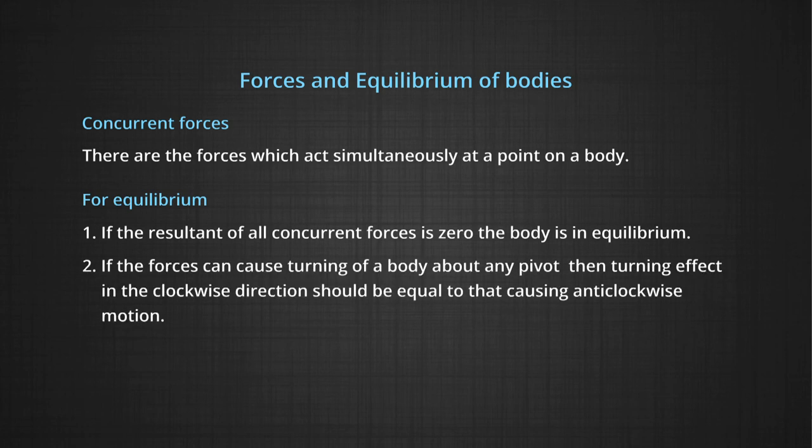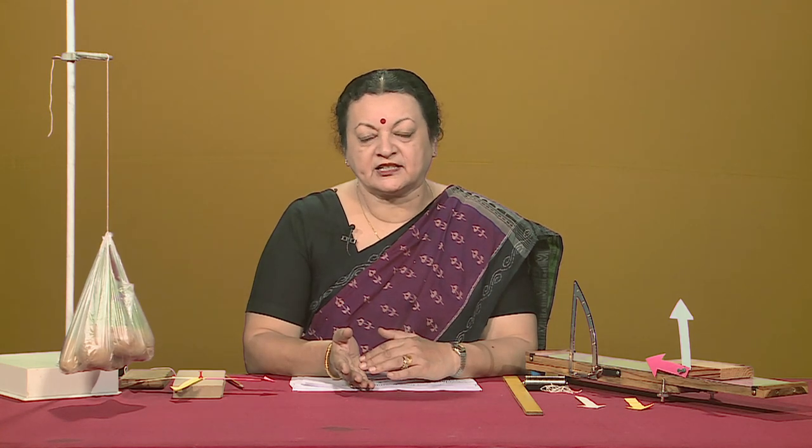The rules for equilibrium are: if all the forces make up a net force equal to zero, then the body is in equilibrium and does not move at all. Also, if a force is likely to cause rotation about some pivot, the forces causing clockwise motion are exactly equal to the forces causing anti-clockwise motion — clockwise turning is equated to anti-clockwise turning. Therefore, we can start doing some simple problems using these.